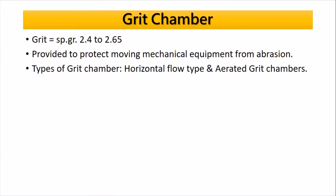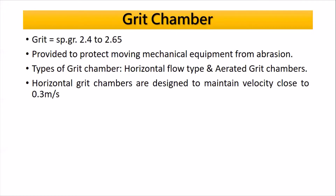The main object of the grit chamber is to remove grit and sand at the bottom of the tank. The specified detention time provided in the grit chamber is one minute, equal to 60 seconds. The specific gravity of grit is 2.4 to 2.65. It provides protection for moving mechanical equipment from abrasion. Types of grit chamber include horizontal flow type and aerated grit chamber.